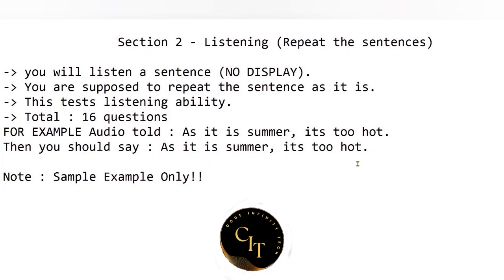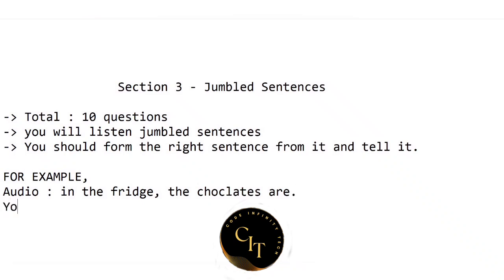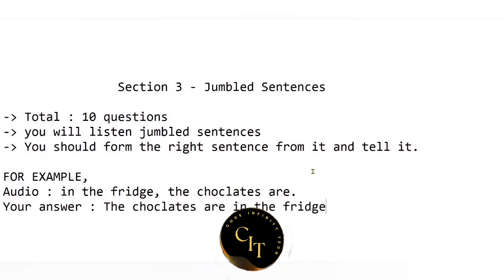Section 3 is about jumbled sentences. There will be 10 questions. Again, only audio — no text will be displayed. For each question you will hear some jumbled words and you need to reframe the sentence correctly, then read it aloud. For example, if you hear 'in the fridge the chocolates are', the correct sentence would be 'the chocolates are in the fridge'. You repeat this process for all remaining questions. The statements won't be too long, so you can easily get through this section.